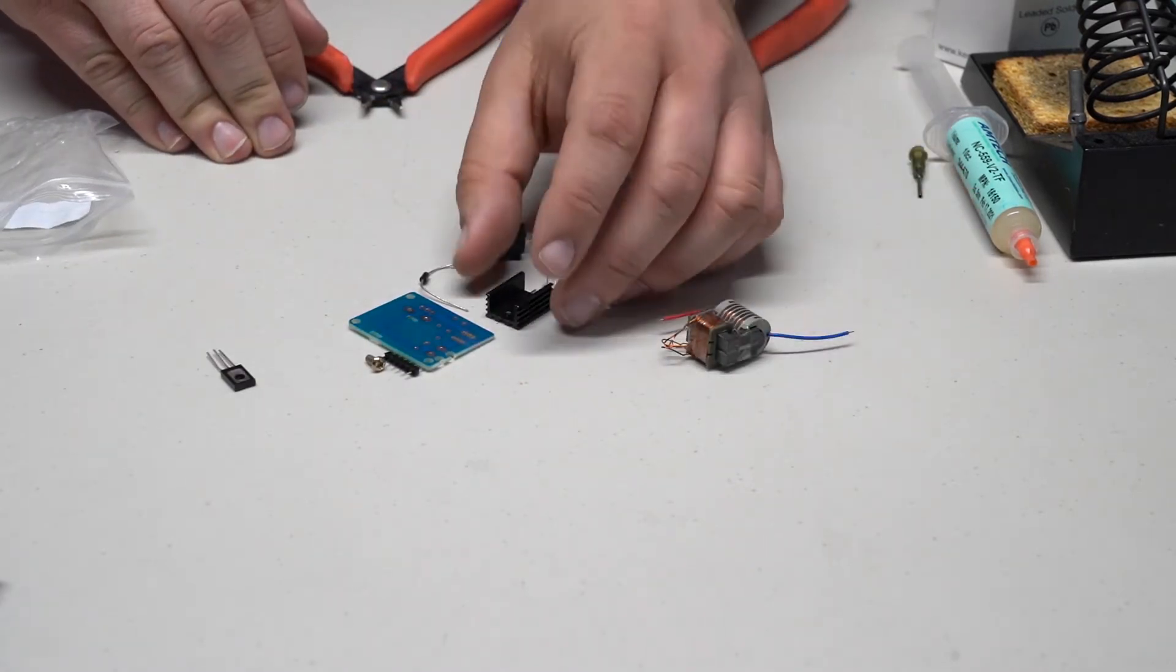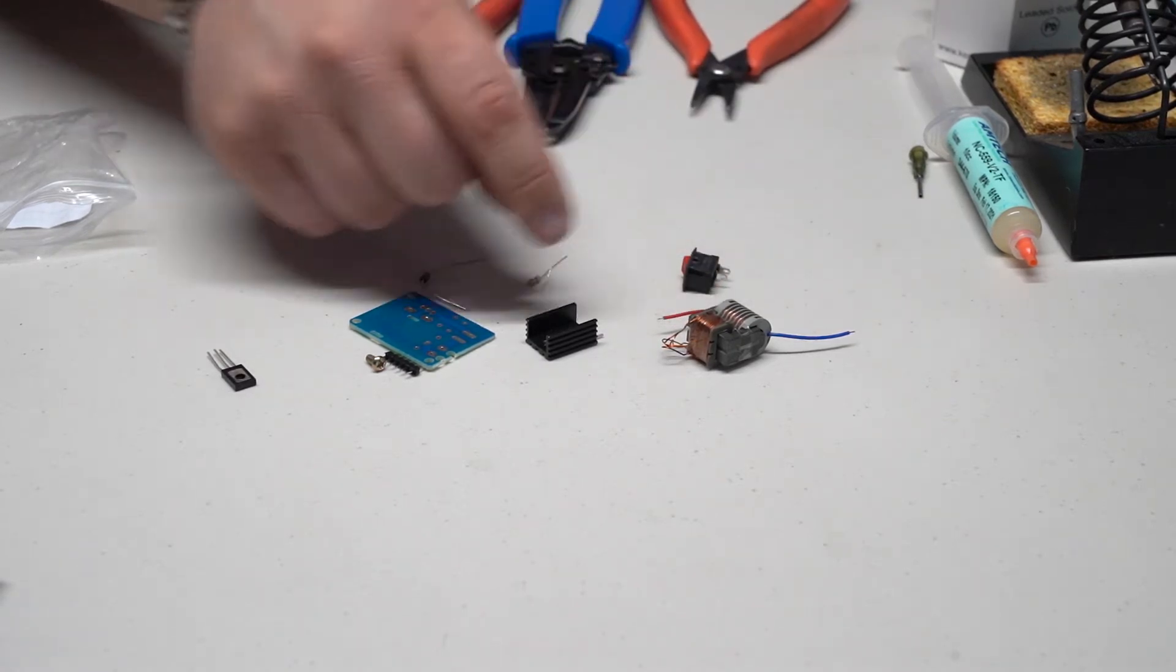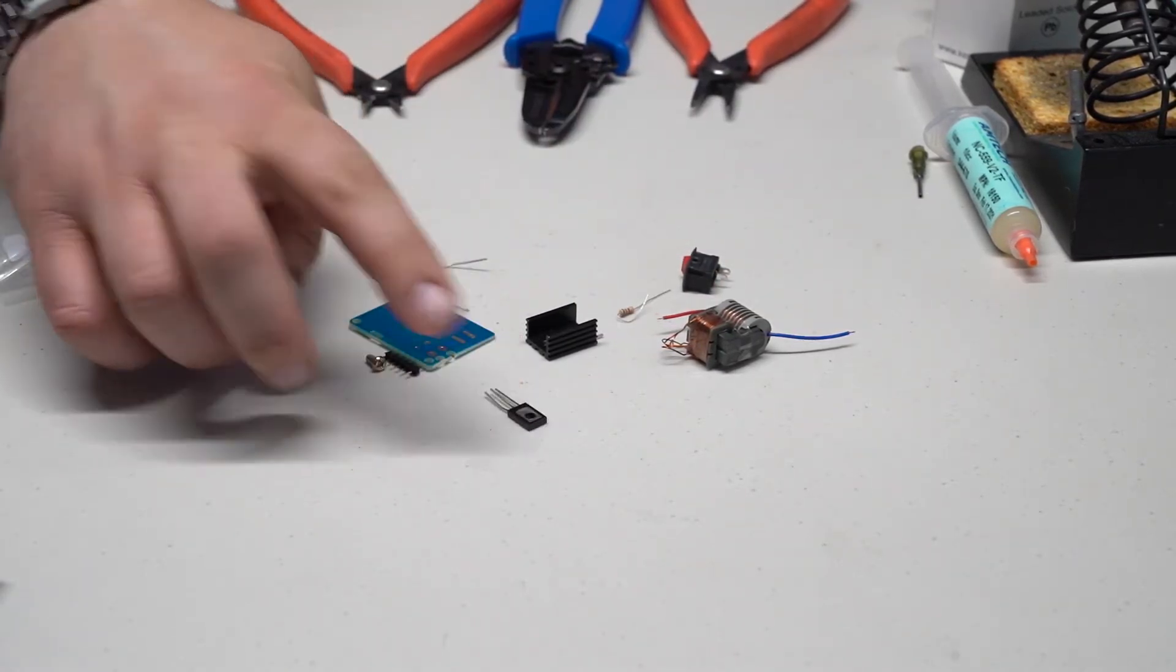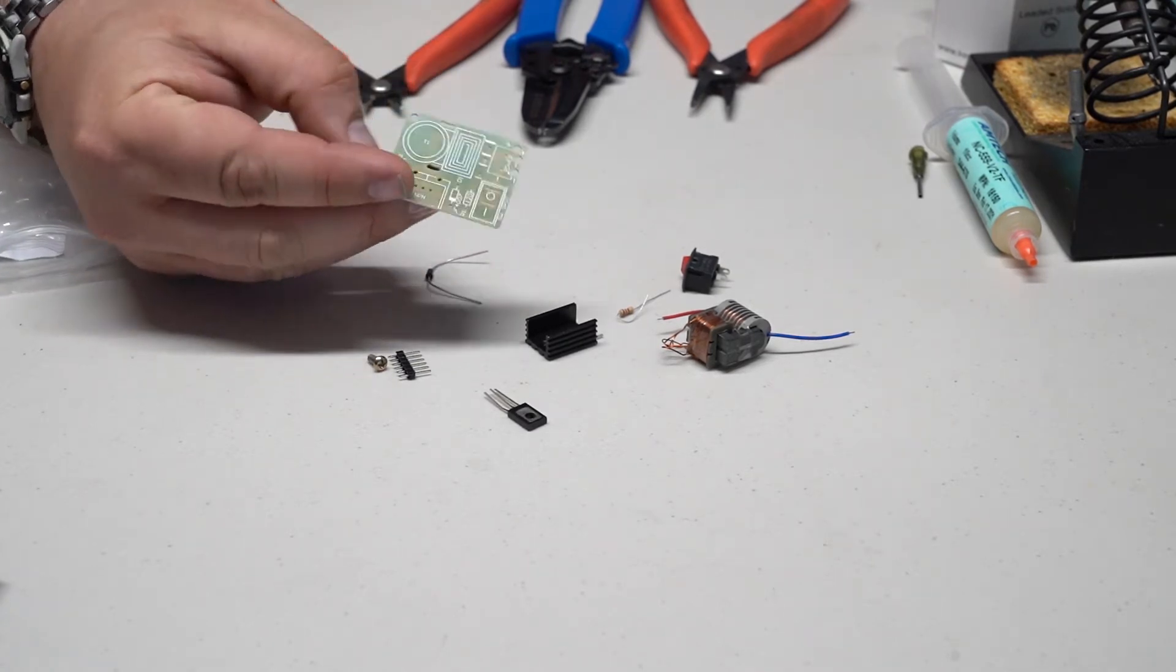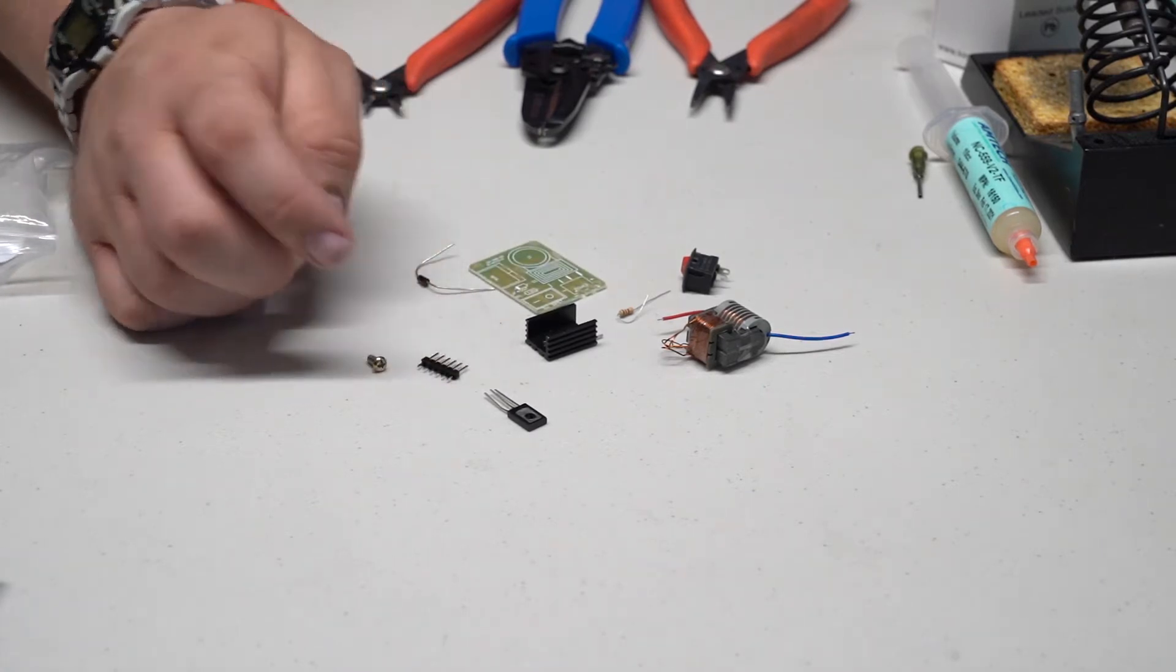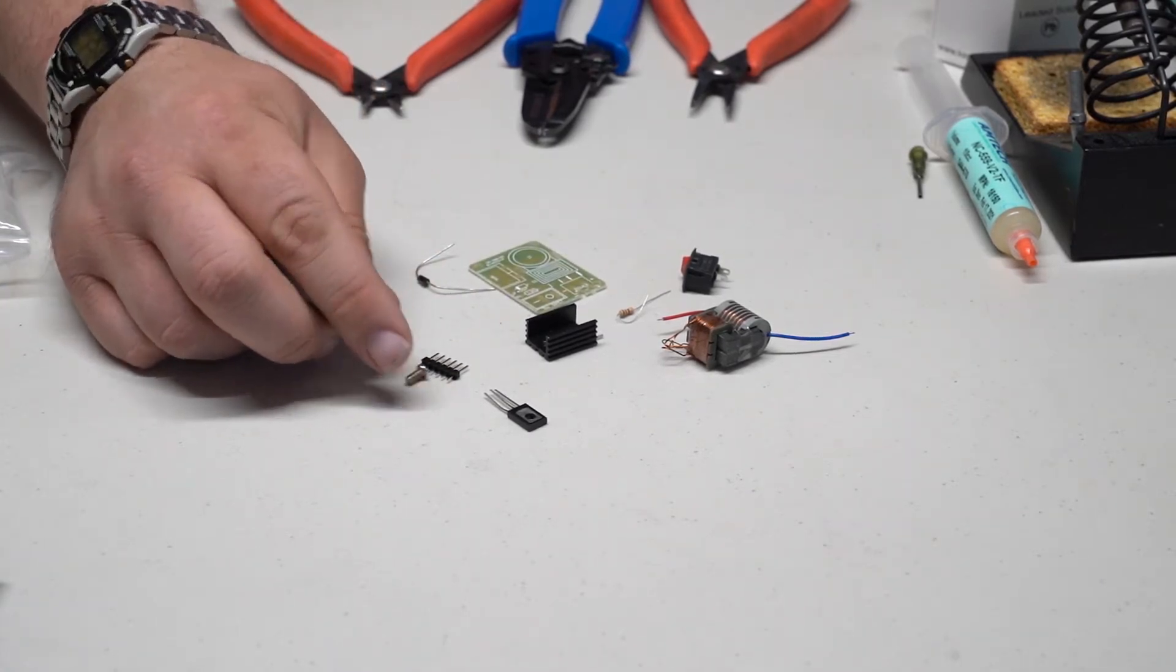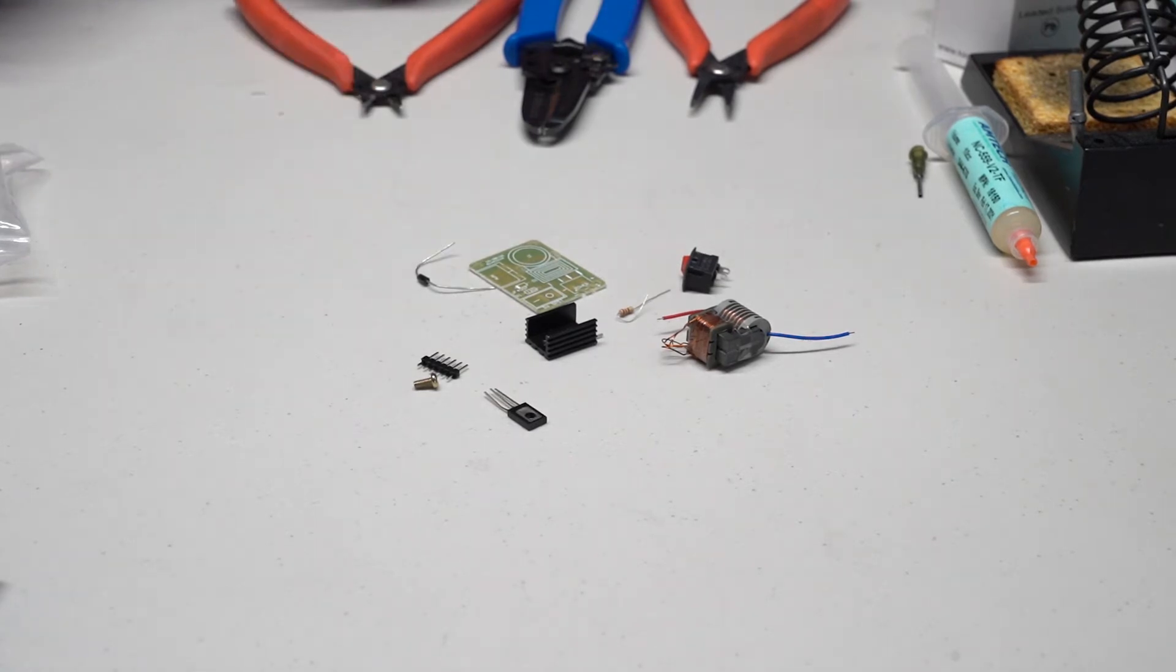Looks like we've got our high voltage transformer here, heatsink, on-off switch, resistor, and according to the circuit board, an NPN transistor. We've got a male pin header, and a screw to hold the transistor onto the heatsink. And I happen to have my soldering equipment here, so let's put this thing together and see what it ends up looking like.